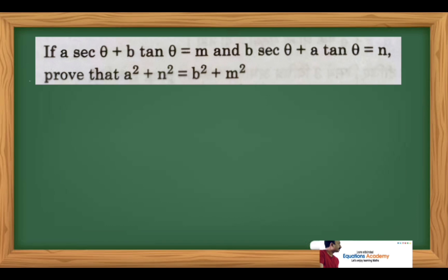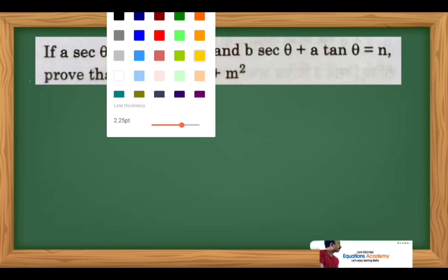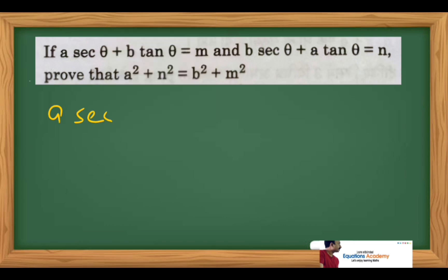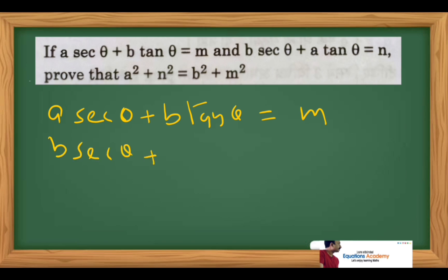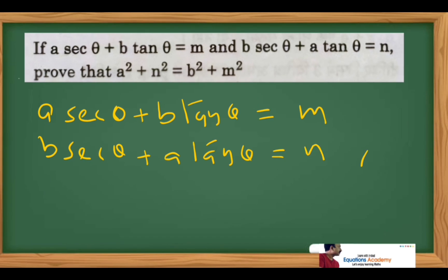If a·secθ + b·tanθ = m and b·secθ + a·tanθ = n, then prove that a² + n² = b² + m². Keep the first as equation 1 and the second as equation 2.